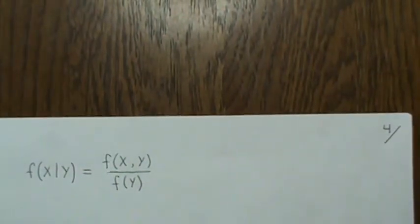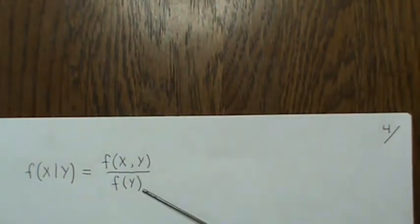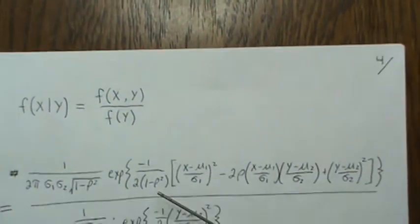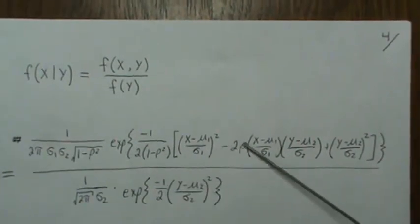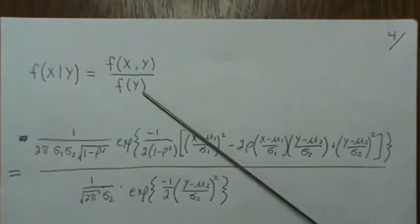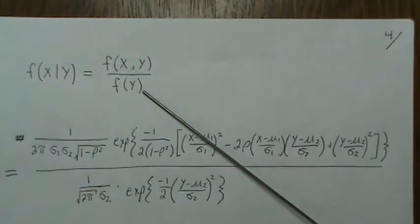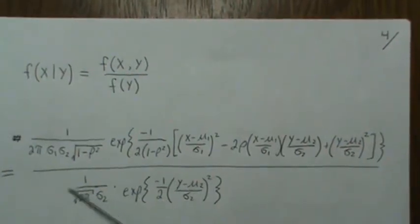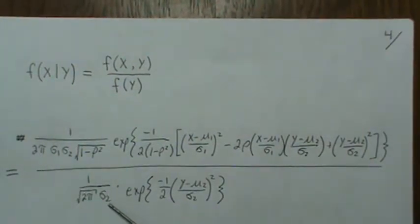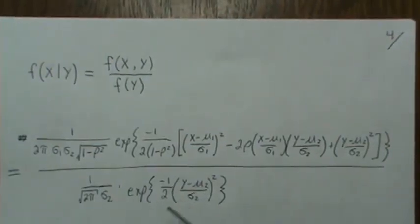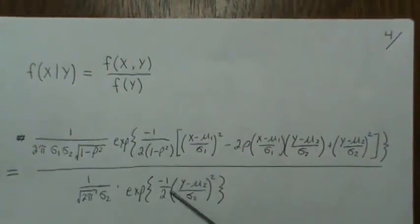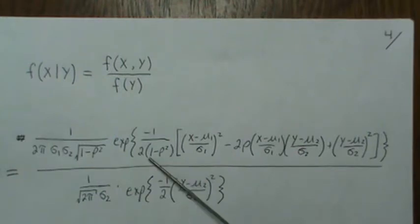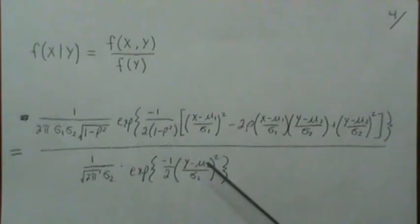Now let's look at the conditional distribution. For x given y, the formula is the joint divided by the marginal. We plug in the joint distribution we just found and the marginal of y, which is normal(mu2, sigma2 squared). Simplifying: the normalization constants partially cancel, sigma2 squared cancels, and the marginal's exponential comes up as a positive exponent — e to the plus one half — then we factor out one half times one over (1 minus rho squared).